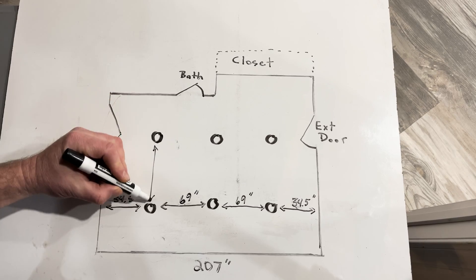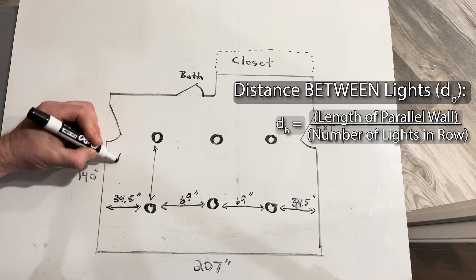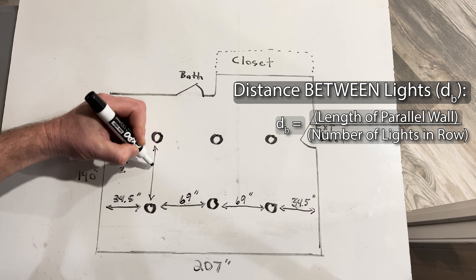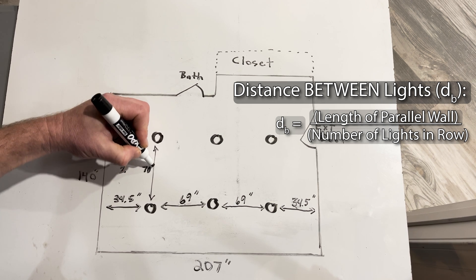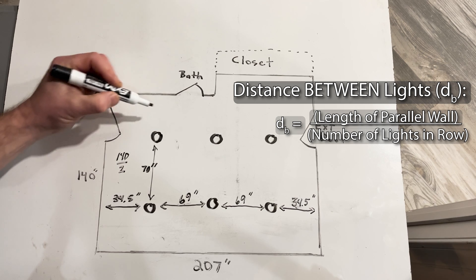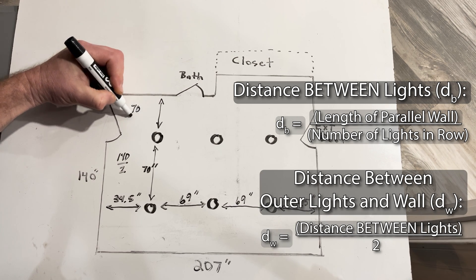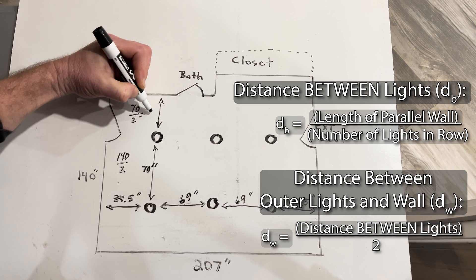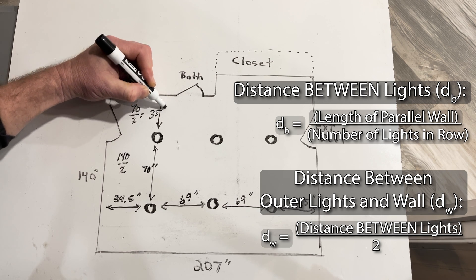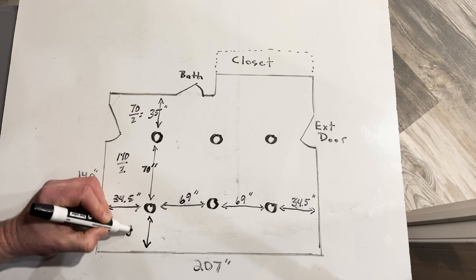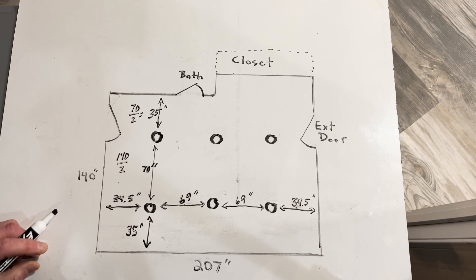The same approach works for the other wall as well. I'll take the wall length, 140 inches, divide by the number of lights, which in this case is two, and this gives me 70 inches. So there will be 70 inches between the lights. Then divide 70 inches by two to determine the distance between the lights and the walls. 70 divided by two is 35.